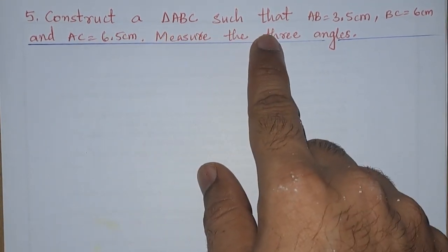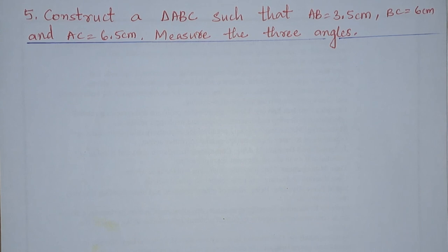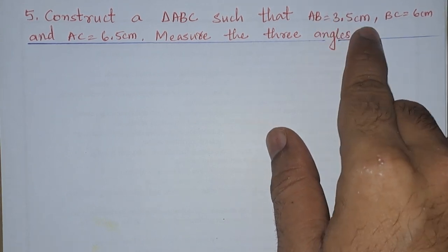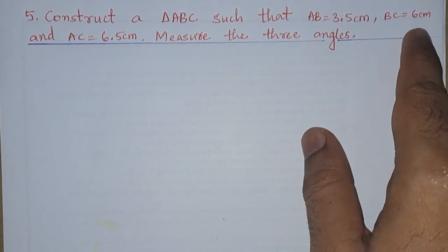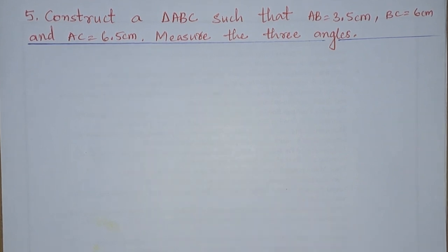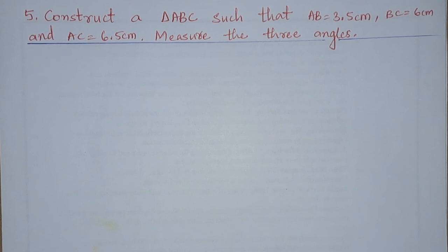Fifth problem: Construct a triangle such that AB equals 3.5 centimeters, BC equals 6 centimeters, and AC equals 6.5 centimeters. Measure the three angles. So they have given the dimensions AB, BC, and AC, and we need to construct a triangle and also measure the three angles.